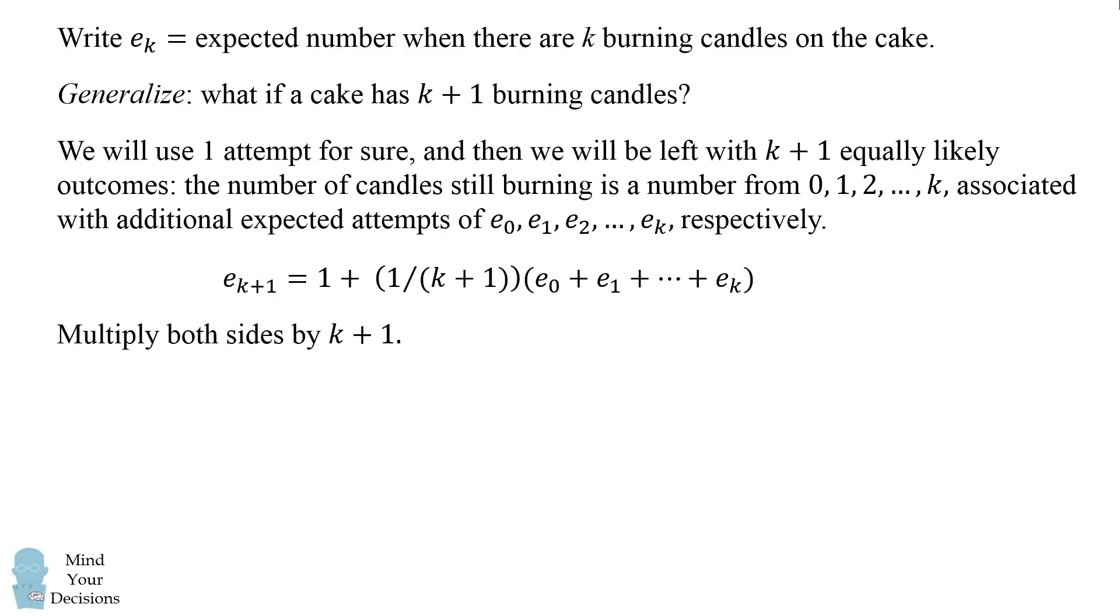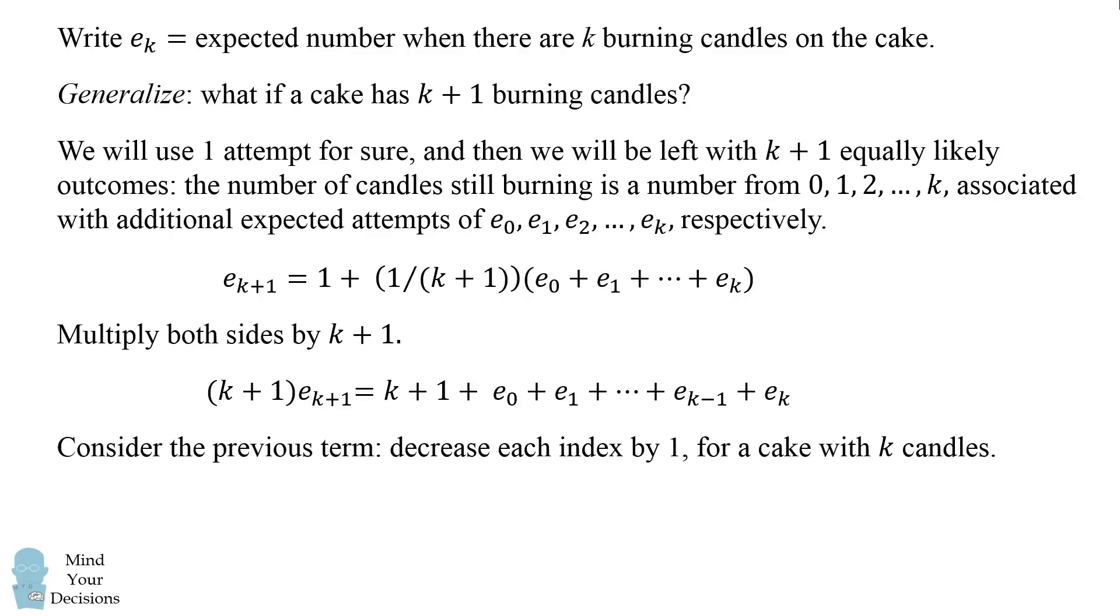Now, we'll multiply both sides of the equation by k plus 1. So, we have k plus 1 times e of k plus 1, and that will be equal to k plus 1 plus the sum going from e_0 to e_k. Now, to get consecutive terms, we'll consider the previous term. We'll decrease each index by 1 to consider a cake with k candles. So, on the left-hand side, this will be k times e_k. Then, we consider this k plus 1 term. That'll become k. Then, we consider the sum from 0 to k. That'll become the sum from 0 to k minus 1. So, this is the equation for a birthday cake with k candles. So, I'll write this equation out, and now we'll consider these two equations.